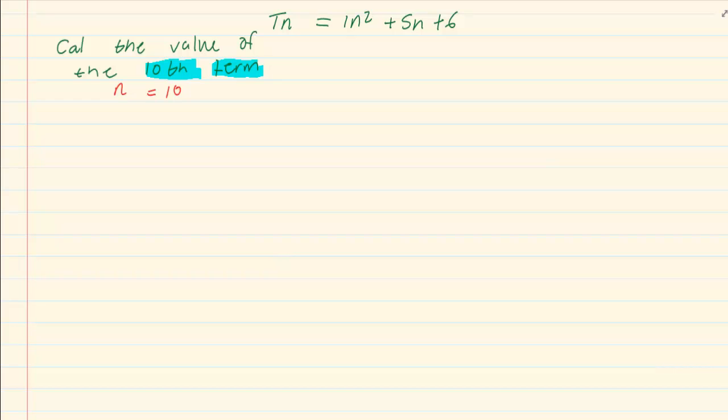Once you can clarify between tn and n, then you simply substitute into the formula. So I have tn is equal to 1 into 10 squared plus 5 into 10 plus 6, which is equal to 156. So the value of term 10 is equal to 156.